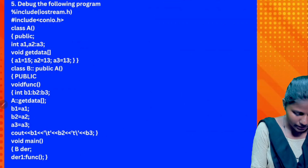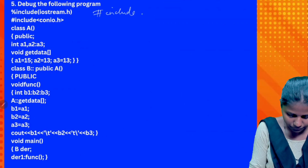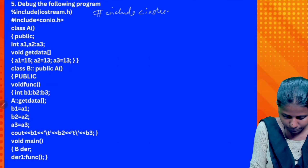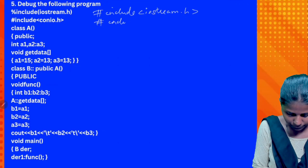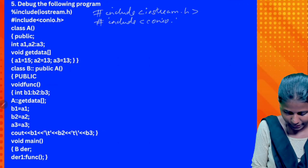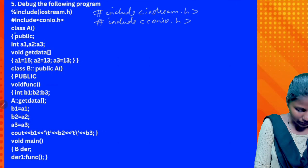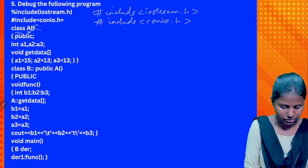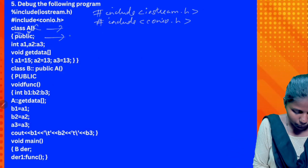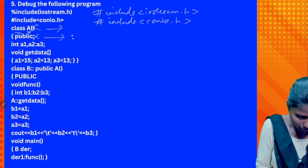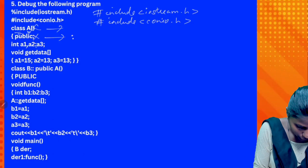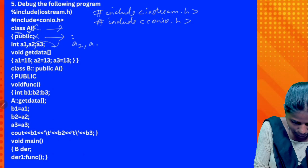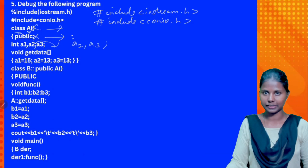Final program — see hash include iostream.h. This is hash include conu.h. Class name comes, class name comes in this bracket — so this is an error. Public in this bracket, colon comes, semicolon comes. Next in this bracket: a2, a3 — this is correct.